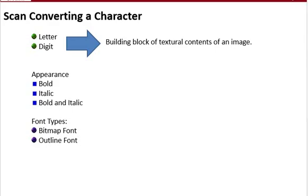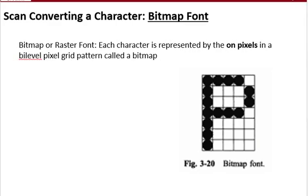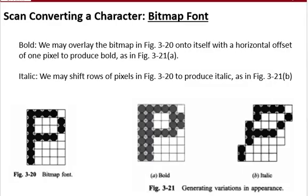Font types are bitmap font and outline font. In the bitmap font, we use bits or pixels — that is why it is known as the bitmap font. The bold font uses a much greater number of bits, which is why it is known as bold.